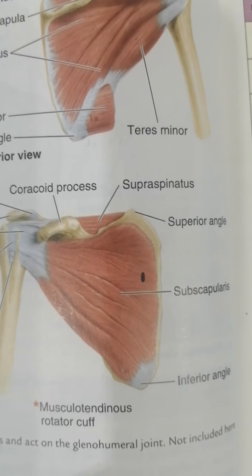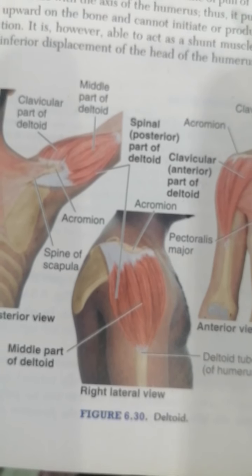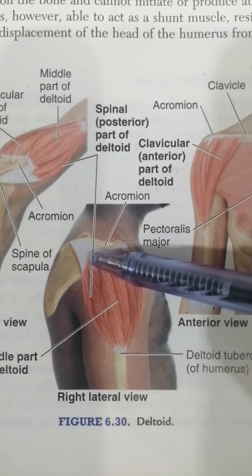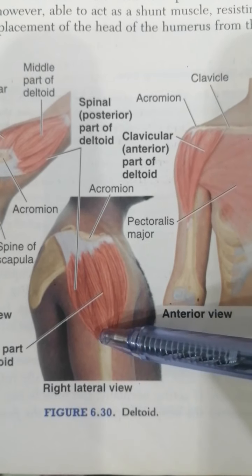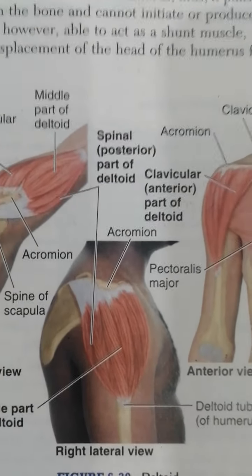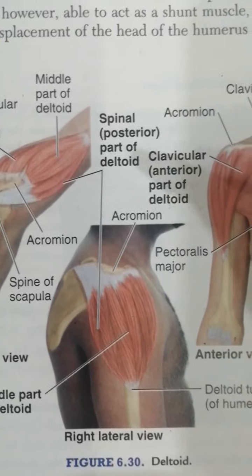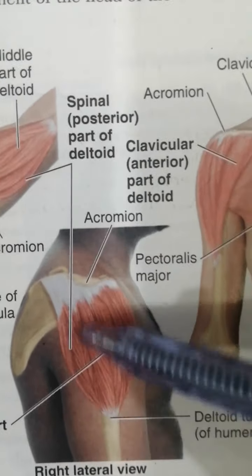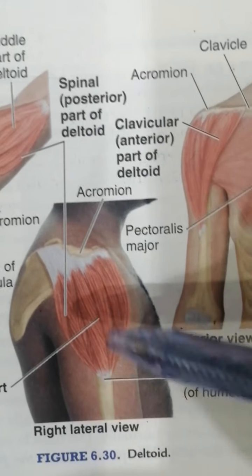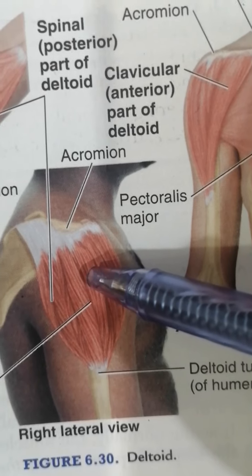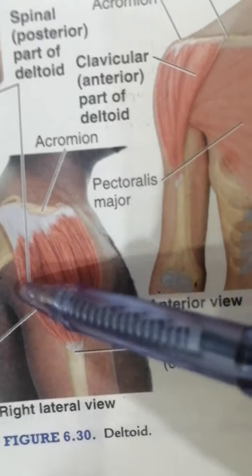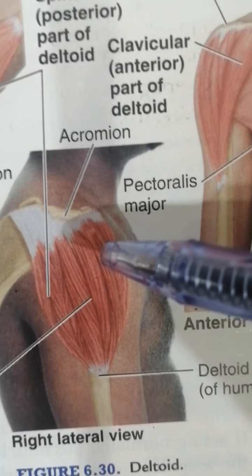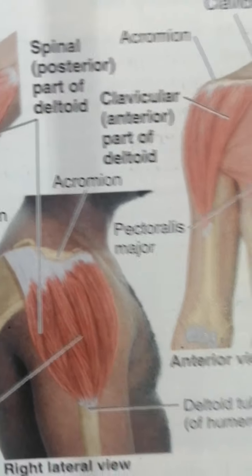The first muscle in the scapulohumeral group is the deltoid. Here you can see the deltoid muscle from different views. The deltoid originates from the lateral third of the clavicle, acromion, and spine of the scapula, and inserts over the deltoid tuberosity of the humerus. It is a very thick and powerful coarse-textured muscle, and its name comes from its resemblance to an inverted Greek letter delta. It is divided into three fiber types: unipinnate anterior fibers, multi-pinnate middle fibers, and unipinnate posterior fibers.